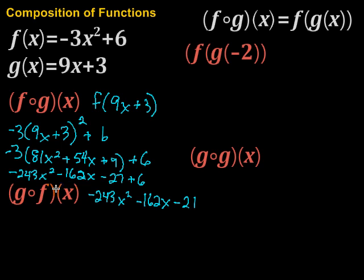Let's take a look at g of f of x. So in this case what we're going to do is we're going to insert the f of x function, what that is, into the g of x function. So I'm going to start by writing it as g of, and f of x is this, so I'm going to put g of negative 3x squared plus 6.